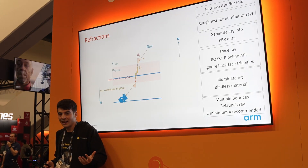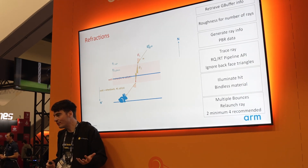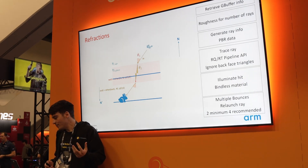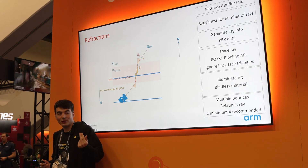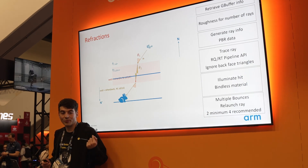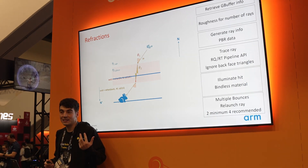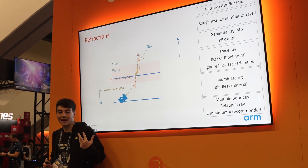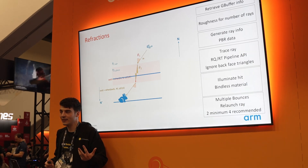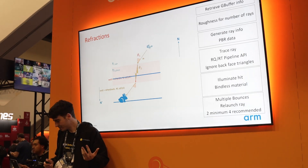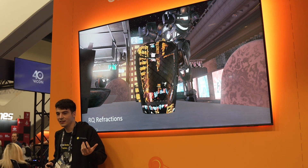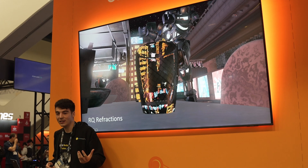Now I will talk about refractions. Refractions are also very similar to reflections — we sample from the G-buffer, generate the ray, and trace it using Ray Query or the ray tracing pipeline. When tracing this ray, we need to ignore back-faced triangles because we are actually going inside the geometry. Refractions also need multiple hits — we recommend using at least two: one for the entry hit and one for when we exit the refractive object. But for a realistic result, I would recommend using at least four, to be able to properly render something like glass. Similar to reflections, refractions also need to use bindless materials to retrieve the material of the hit object. Here we have the scene without refractions, and here we have refractions. I think refractions are the best use case for ray tracing — you can see how much detail it adds to the scene, and this is almost impossible to simulate without actual ray tracing.